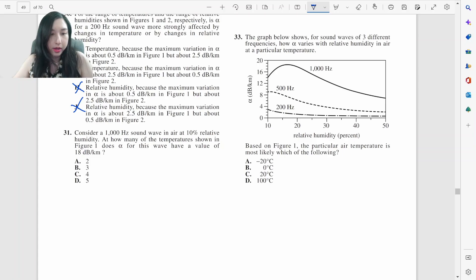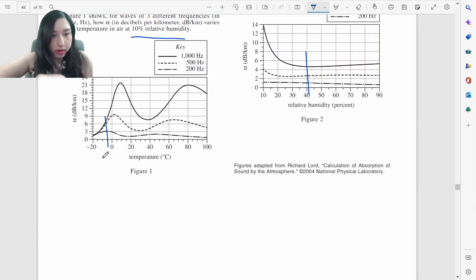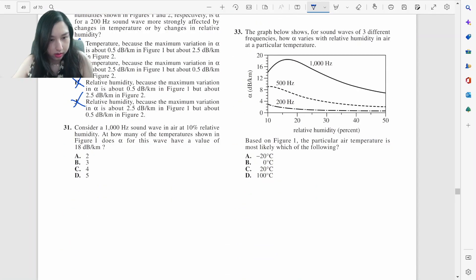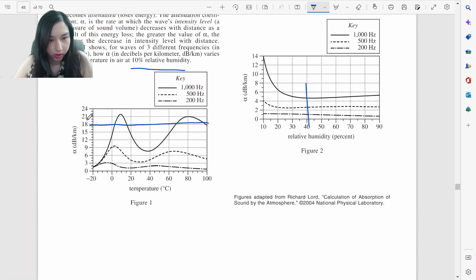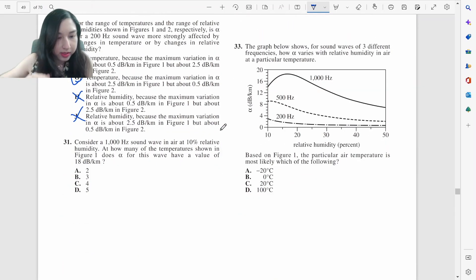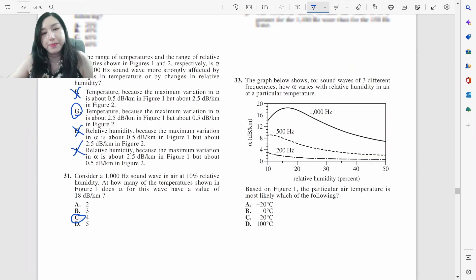Let's look at 31. 1000 hertz sound wave in air at 10% relative humidity. How many of these temperatures shown in figure one as alpha? Figure one where alpha is 18, it's going to be right here. And how many of the temperatures at one, two, three, four intersects four times. It's going to be C right there.